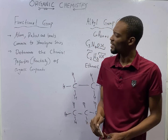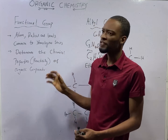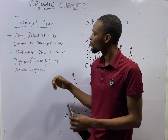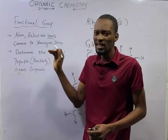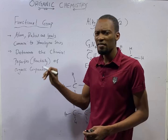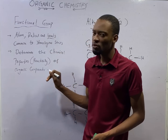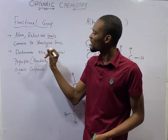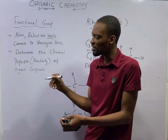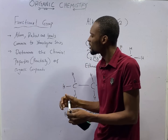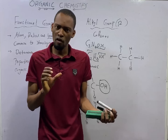So if you are to get anything from this class, it should be that functional groups are atoms — like a particular element — radicals, or bonds that are common to a homologous series. For alkanes, single bonds are common to them. For alkenes, double bonds are common to them — every alkene must have double bonds. For alkynes, triple bonds are common to them. Those are the bonds, atoms, and radicals that tell you which family a compound belongs to. And it is the functional group that determines the chemical properties and reactivity of organic compounds.